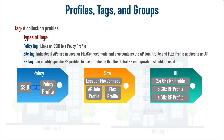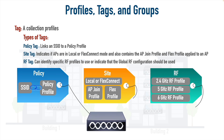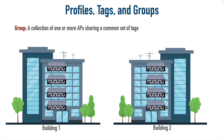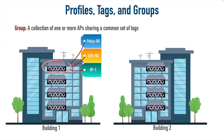We can take a set of tags and apply them to an access point, and we might have multiple access points that need the same set of tags — so we can logically group them together. A group is a collection of one or more access points that need a common set of tags. Remember that top access point in building one? It was the only one supposed to advertise the research and development SSID, so we might put it in its own group with its own set of tags — for example, a policy called policy-RD. All eight access points might share the same site tag since they're all at the HQ site.